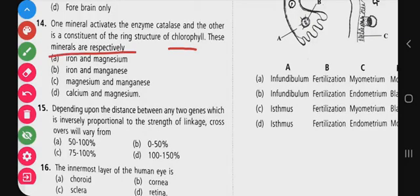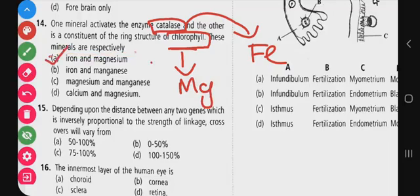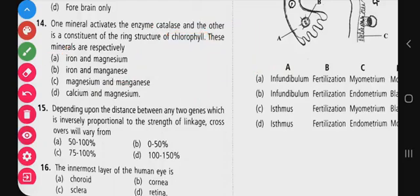Question 14: one mineral activates the enzyme catalase, another is a constituent of the ring structure of chlorophyll - what are these minerals respectively? Catalase is activated by iron (Fe). Chlorophyll contains magnesium (Mg). So the correct answer is option A - iron and magnesium. Iron activates catalase and magnesium is present in chlorophyll.